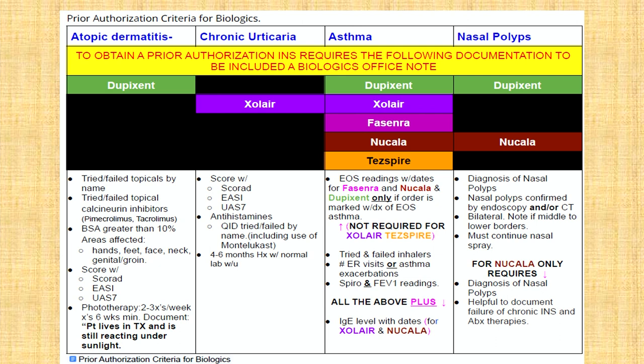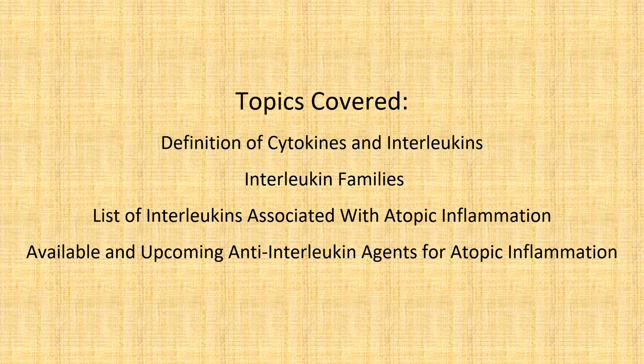As promised, this is our biologic checklist for documentation required for prescribing medicines for atopic dermatitis, chronic urticaria, and nasal polyps. To summarize, we covered the definition of cytokines and interleukin families, went through a list of interleukins associated with atopic inflammation, talked about available and upcoming anti-interleukin agents for atopic inflammation, and discussed documentation requirements for prescribing these drugs.